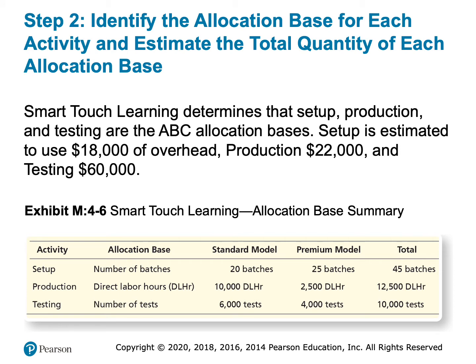Total overhead is $100,000. We didn't add any overhead or take any away — we just took that total overhead of $100,000 and split it between our three activities. We said setup is using $18,000 of the $100,000, production is using $22,000, and testing is using $60,000. We've also computed how many batches each model runs, how many direct labor hours each model uses, and how many tests each model uses. Now based on this data, we're going to compute a rate per activity.